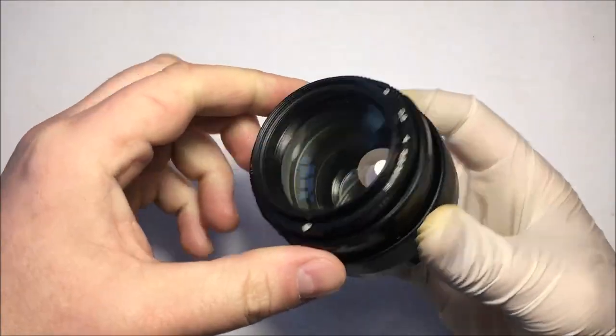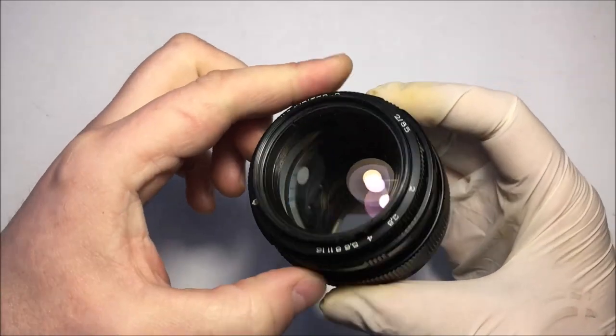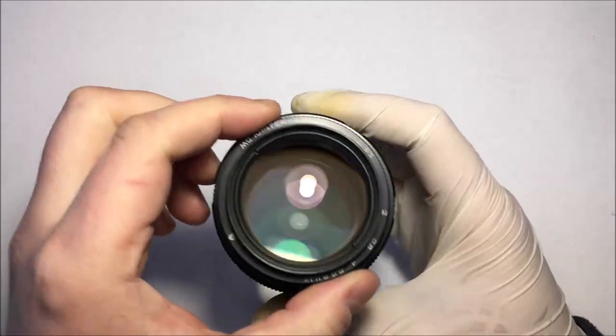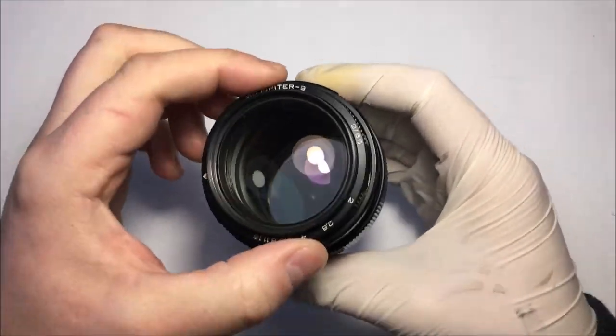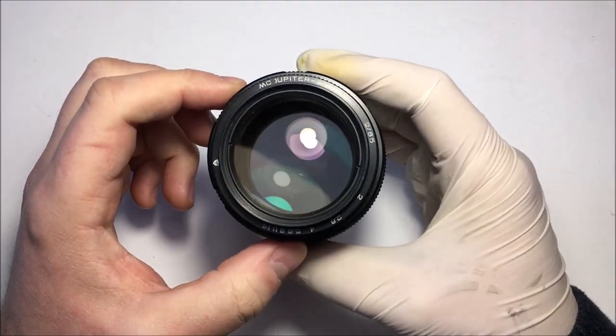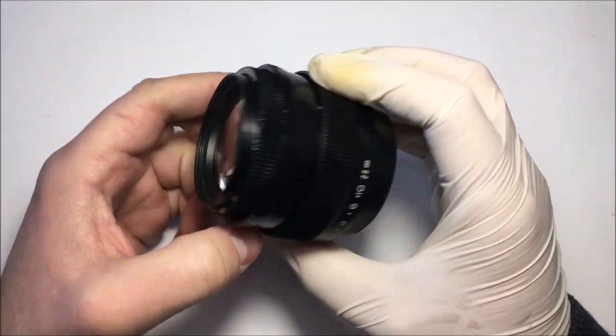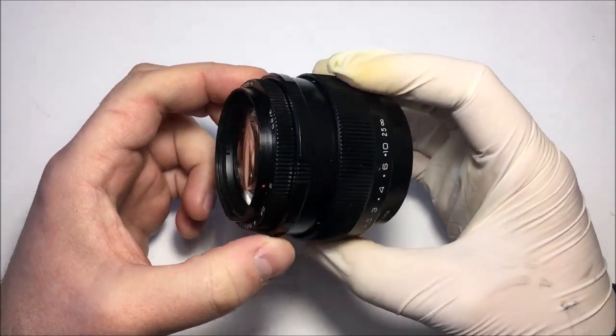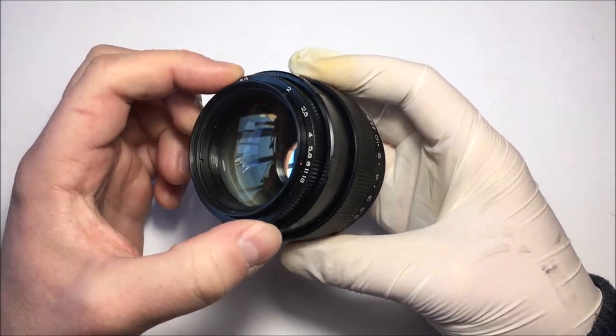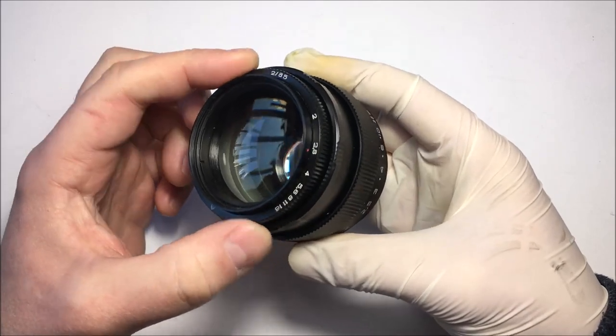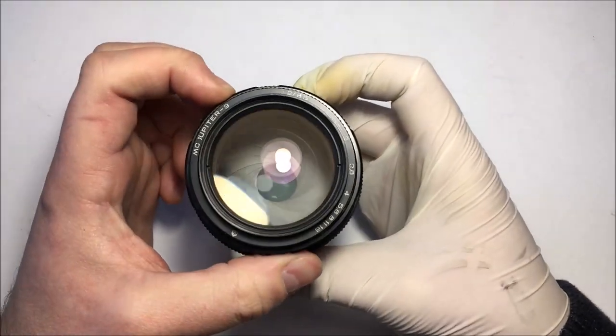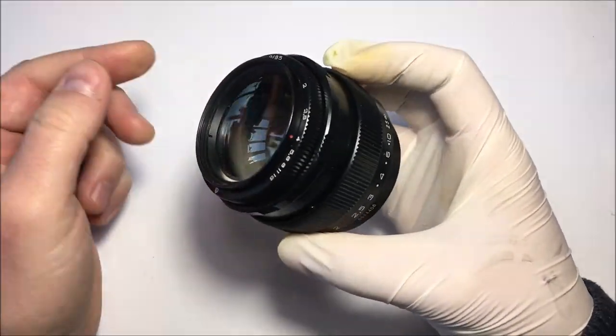Now I will show how to work with the preset aperture feature on Jupiter 9 prime lens. So basically there are two rings here, one with the clicks and another one that moves the aperture blades like this, you see.